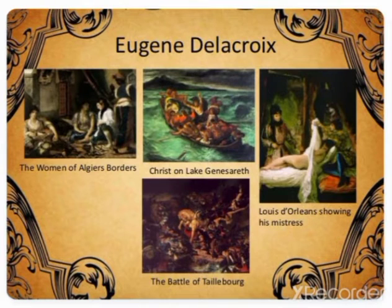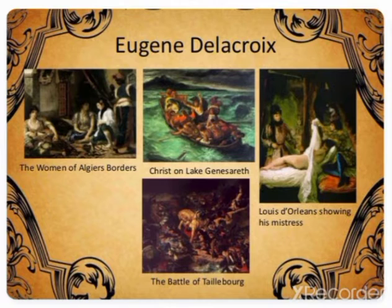The subject matter for his paintings was diverse. He painted about Christ, battles, and women — these are a few examples. You can take a look at these paintings by Eugène: The Women of Algiers, Christ on Lake Gennesaret — all interesting examples of his work.